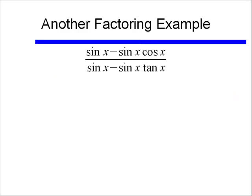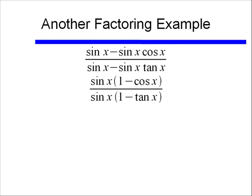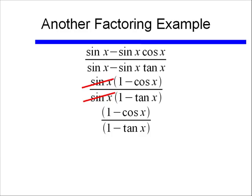So what can we do? Well, we can factor the numerator and the denominator. If we do that, if we pull out a sine x out of my two terms in my denominator and my two terms in my numerator, then I end up with this. Now we can reduce out that sine x from the numerator and the denominator, because what we're doing is we're dividing. If we've got a factor, if we have a multiplication, then we can do this division. And then I'm left with 1 minus cosine x over 1 minus tangent x.